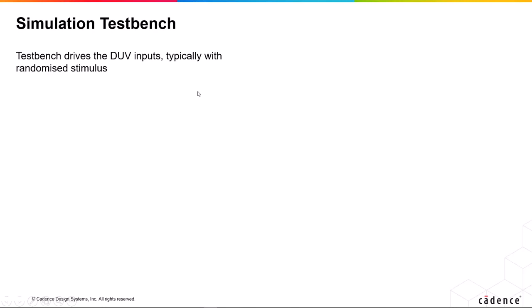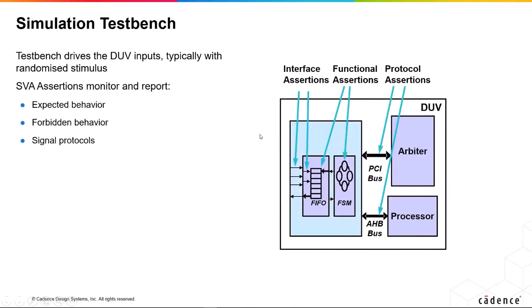So for simulation, as we've seen, what we do is we get our test bench to drive the inputs, typically using randomized stimulus. That's the whole basis of UVM, which is using SystemVerilog and Specman, which came before it.